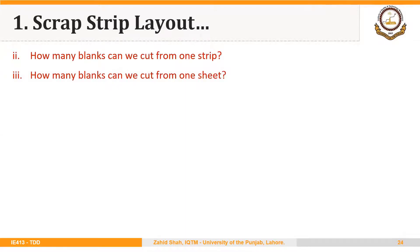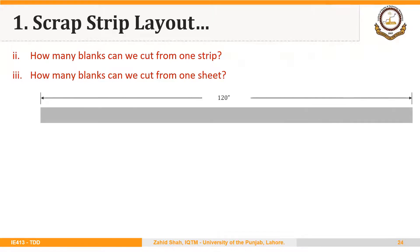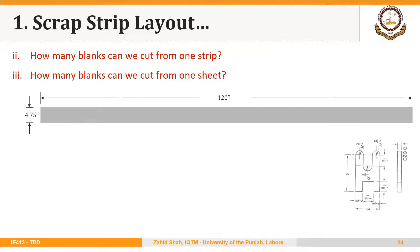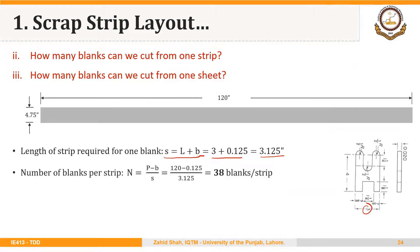Now the question is how many blanks can we cut from one strip. The length of strip needed for one blank is S = L + B. In this case, L is 3 and we are taking B equal to A, which is 0.125. So S = 3 + 0.125 = 3.125 inches. The number of blanks per strip equals (P − B) / S = (120 − 0.125) / 3.125, which gives approximately 38 blanks per strip.